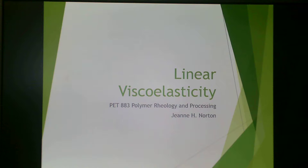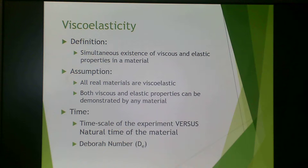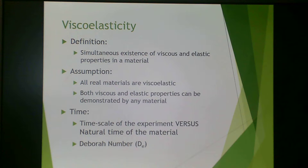This is linear viscoelasticity, video number two for polymer rheology and processing, part two. We went over this in the first video for linear viscoelasticity, but I'll go over it again just to review. The definition of viscoelasticity is the simultaneous existence of viscous and elastic properties in a material. All real materials are viscoelastic — they possess both viscous and elastic properties based on the timescale of the experiment. When we talk about the timescale of the experiment versus the natural time of the material, we're talking about the Deborah number, and timescale is extremely important.